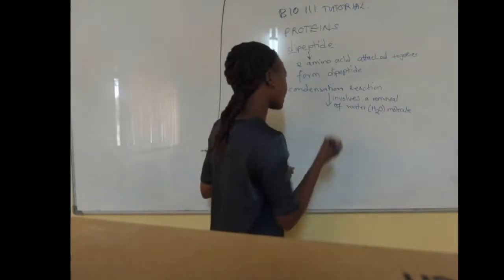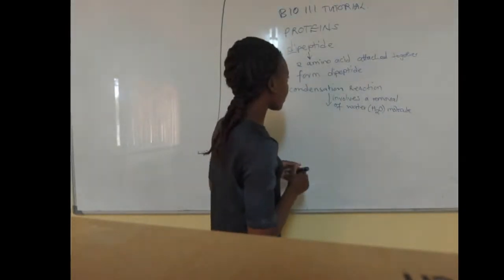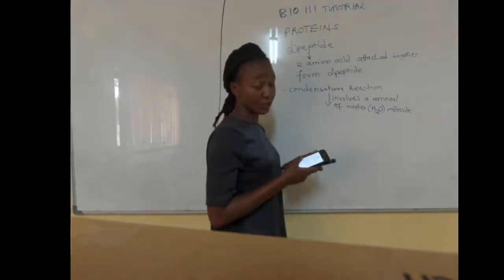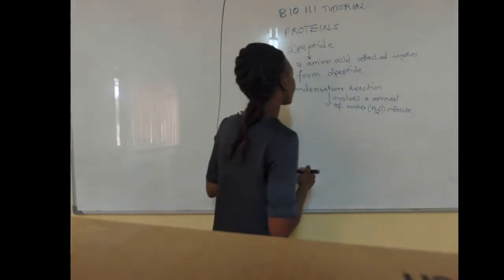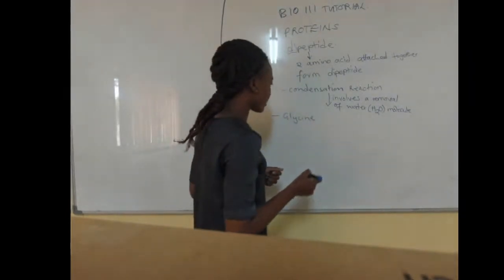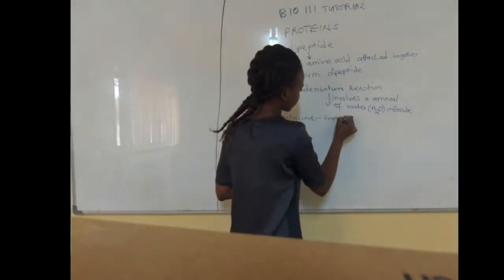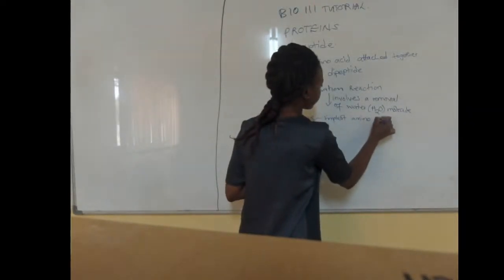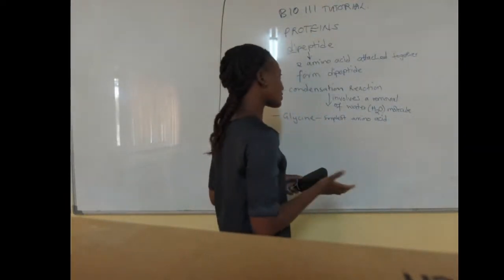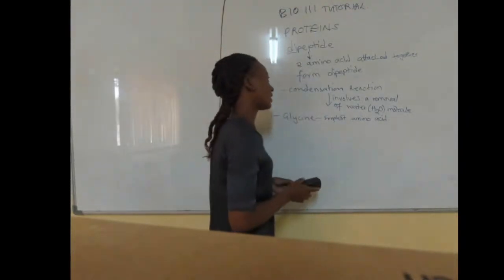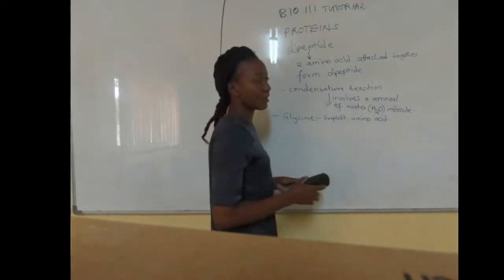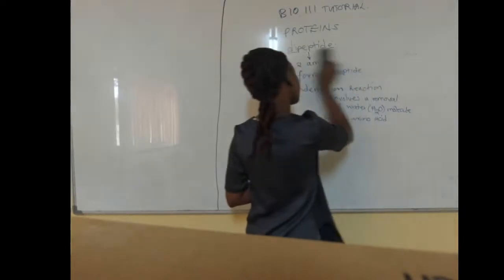To illustrate means you draw with an example of an amino acid. The amino acid I'm going to use for the condensation reaction is glycine. Glycine is the simplest amino acid. Since we are forming a dipeptide, we are attaching two amino acids, because 'di' means two.